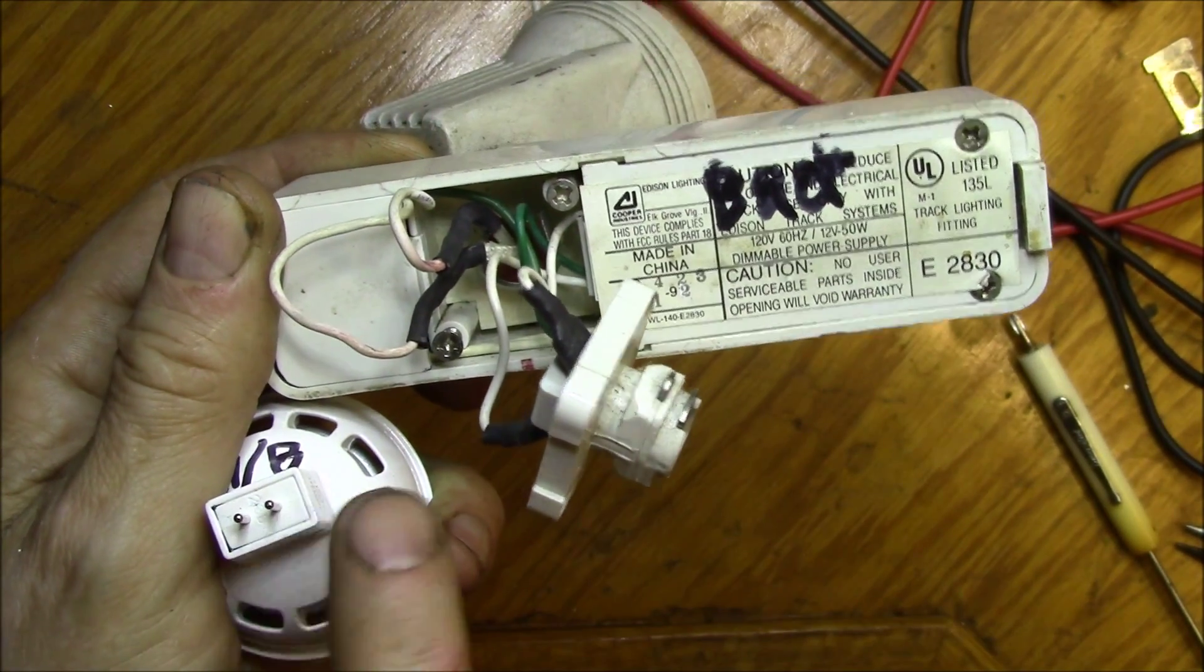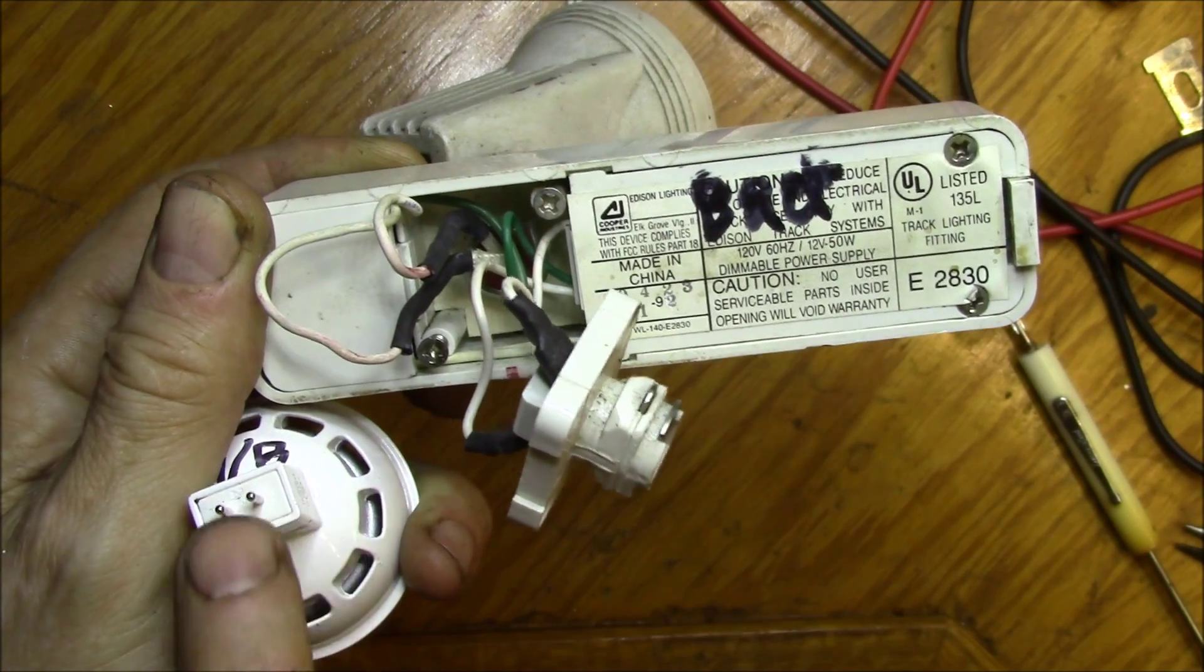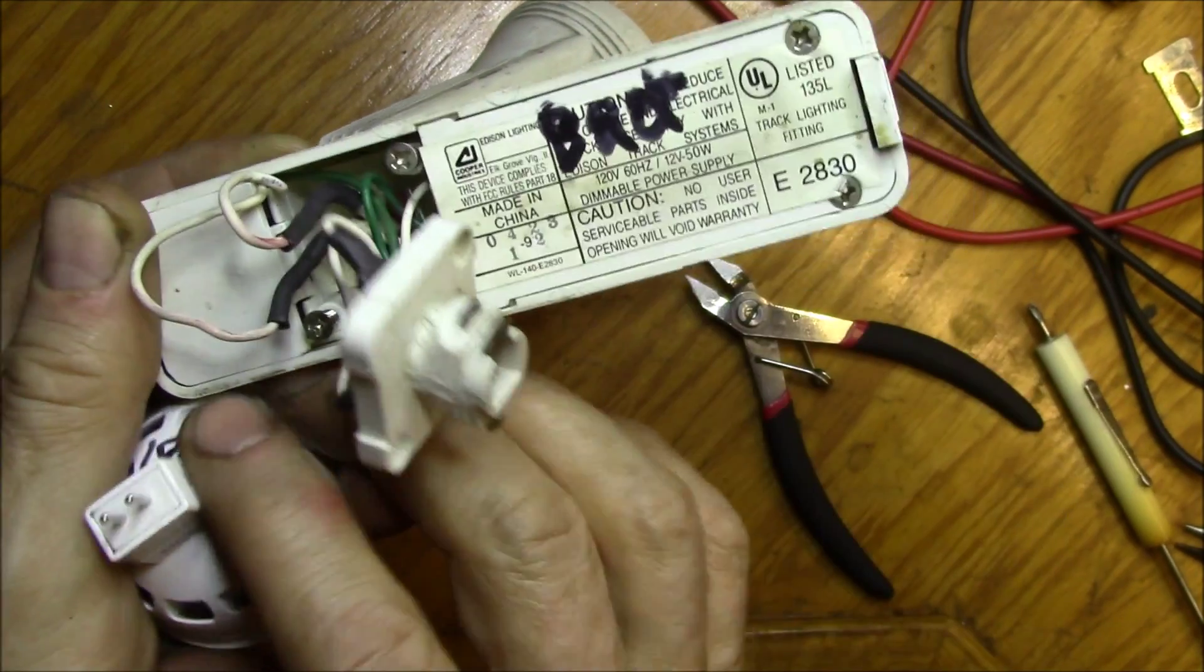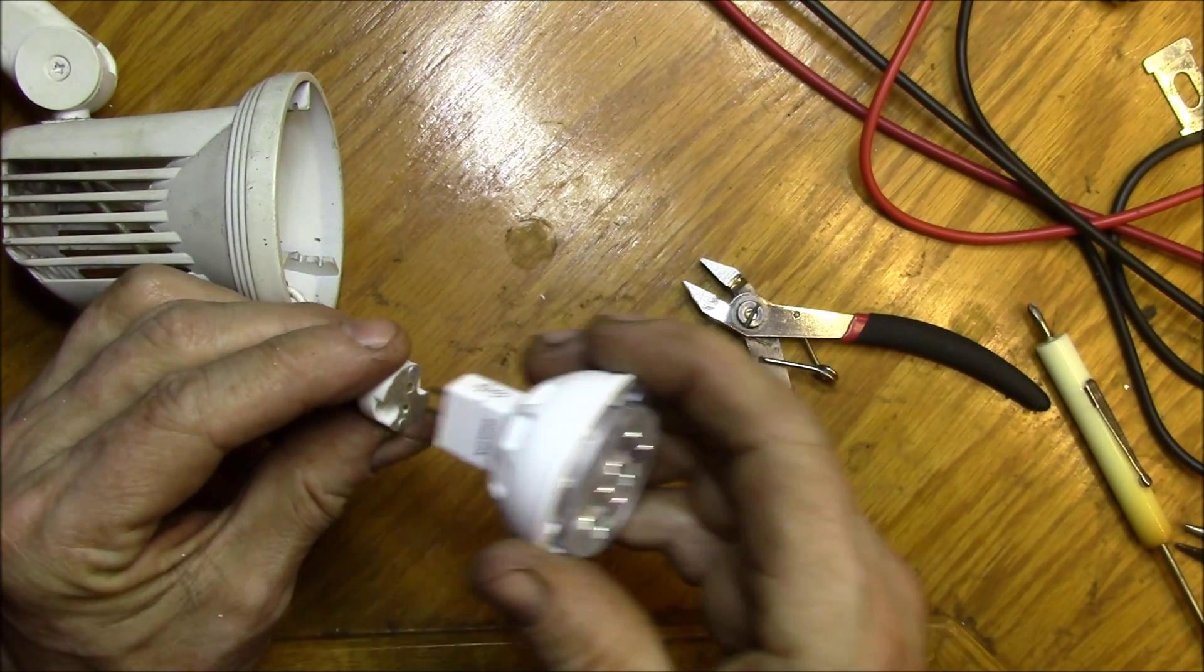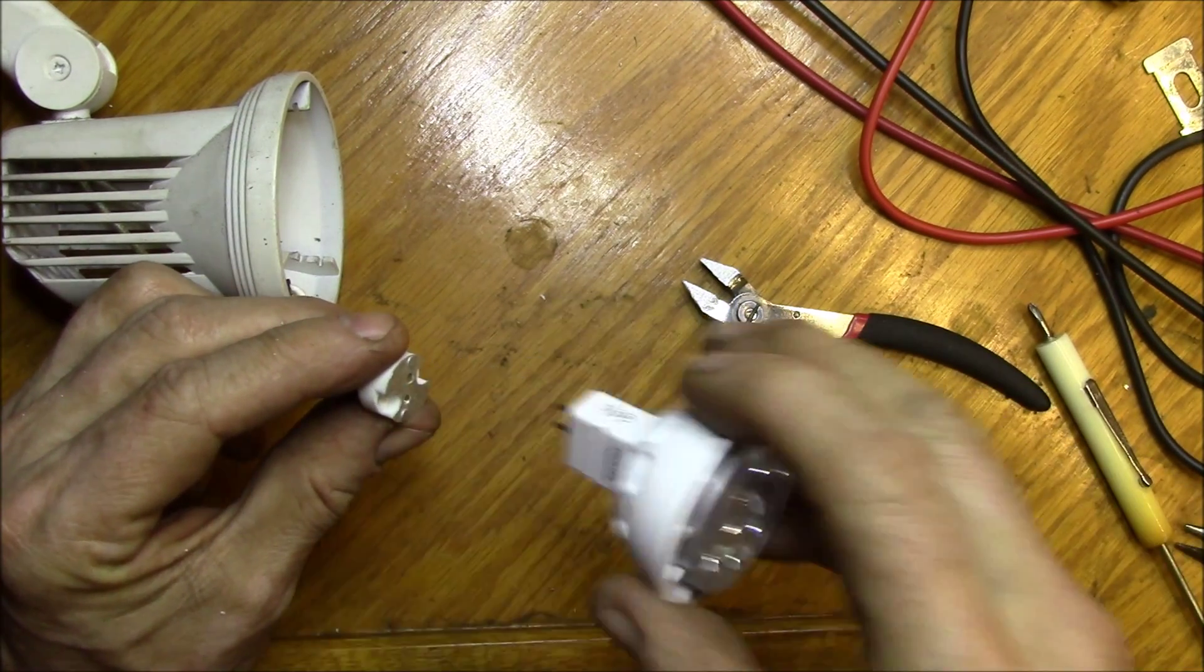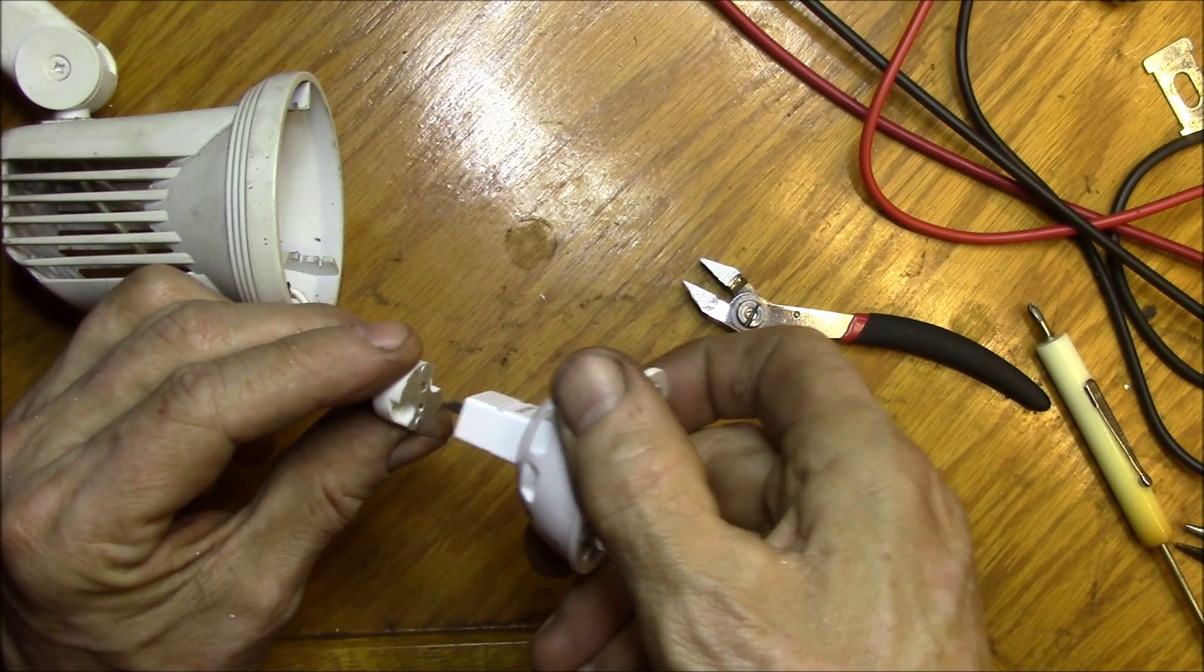If you have the GU 10 bulbs, they have a bigger pin and they have like a head on the pins. Those go in - instead of pushing straight in like this, the GU 10 bulbs you push in and then you twist to lock them in place. These just push straight in.